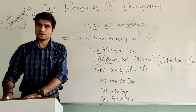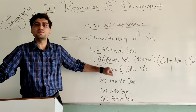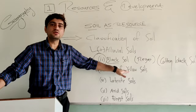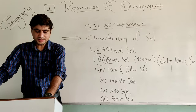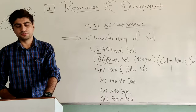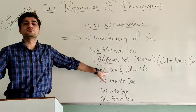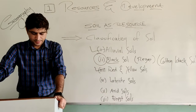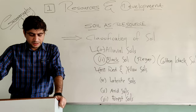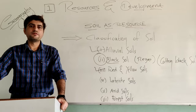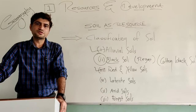The name is on the basis of color. It looks red because of the diffusion of iron in this type of soil. And why yellow? Because when it hydrates, it looks yellow. Red soil is found on crystalline igneous rock, in areas of low rainfall, in the eastern and southern part of the Deccan Plateau. Yellow and red soils are also found in parts of Odisha, Chhattisgarh, the southern part of the Middle Gangetic Plain, and along the Piedmont zone of the Western Ghats. These soils develop reddish color due to diffusion of iron.